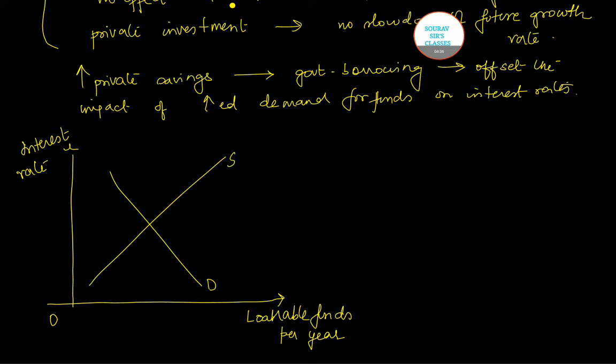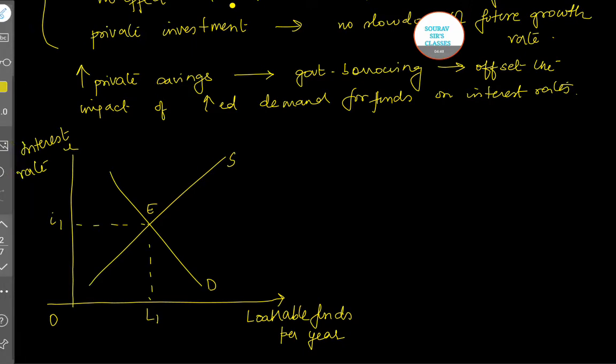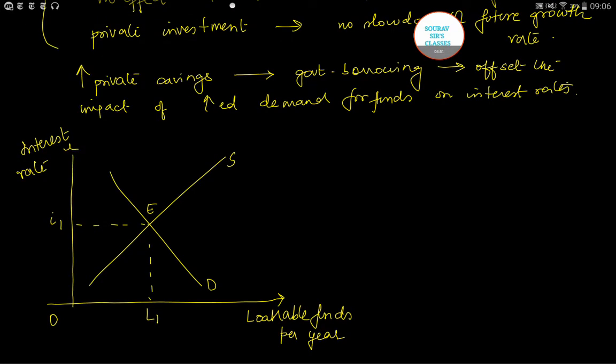And then you have interest rate on the vertical axis. I'll make a downward sloping demand curve, upward sloping supply curve, and mark their intersection as E. So this is L1 and this is i1.